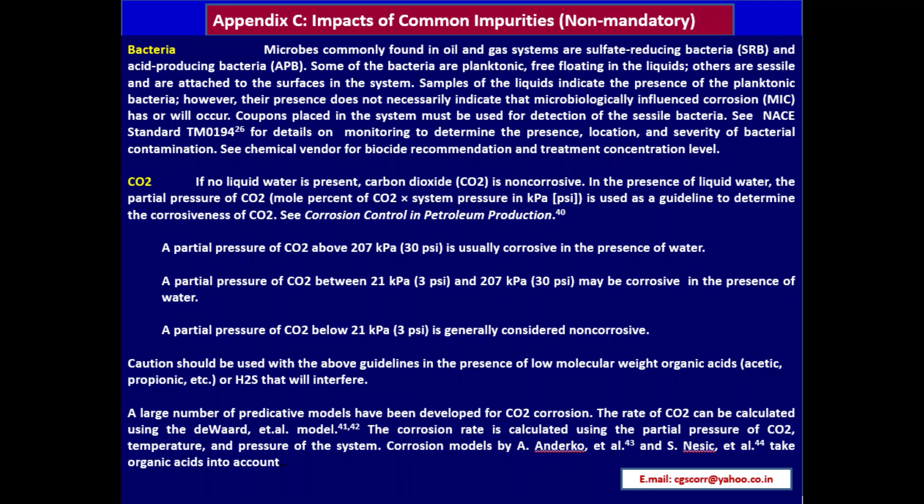Appendix C — Impacts of Common Impurities (non-mandatory): Bacteria — microbes commonly found in oil and gas systems include sulfate-reducing bacteria and acid-producing bacteria. Some bacteria are planktonic (free-floating in liquids); others are sessile and attached to surfaces. Samples of liquids indicate the presence of planktonic bacteria; however, their presence does not necessarily indicate that microbiologically influenced corrosion (MIC) has or will occur. Coupons placed in the system must be used for detection of sessile bacteria. Refer to NACE TM0194 for monitoring details and chemical vendors for biocide recommendations.